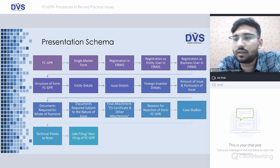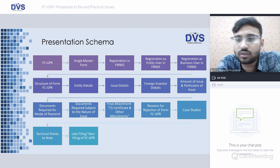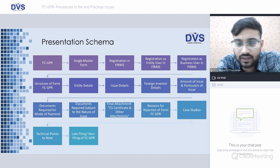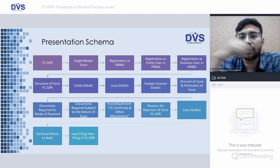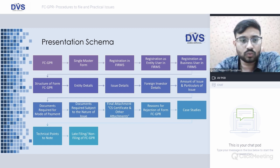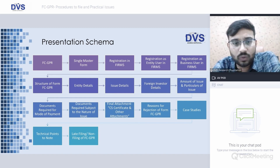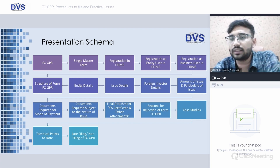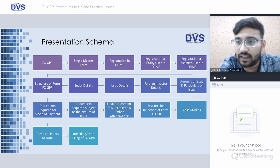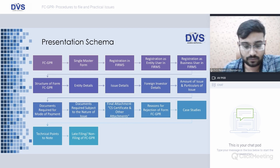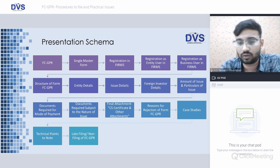The schema for this evening covers: what exactly is Form FC-GPR; Single Master Form registration in the FIRMS website as Entity User and Business User; the structure of the form — entity details, issue details, foreign investor details, amount of issue; documents required to be uploaded along with the form; certification required; reasons for rejection; case studies to understand practically how this filing has to happen; technical points; and penalties in case of late filing or non-compliance.